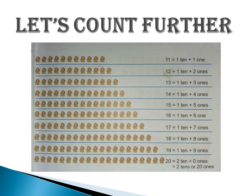17 is equal to 1 ten plus 7 ones. 18 is equal to 1 ten plus 8 ones. 19 is equal to 1 ten plus 9 ones. 20 is equal to 2 tens plus 0 ones. So 2 tens is equal to 20 children.